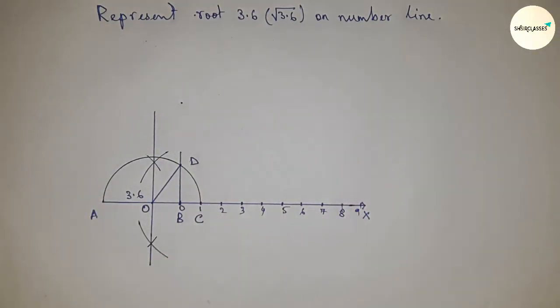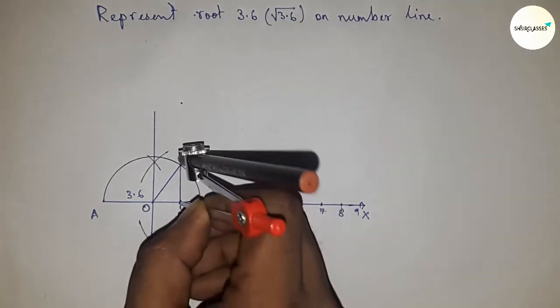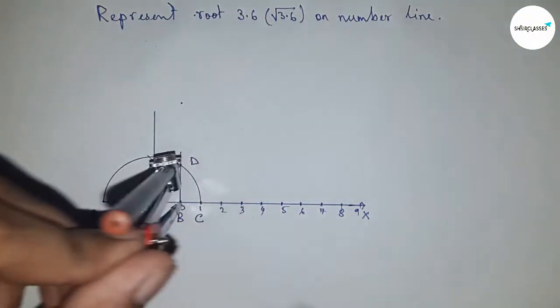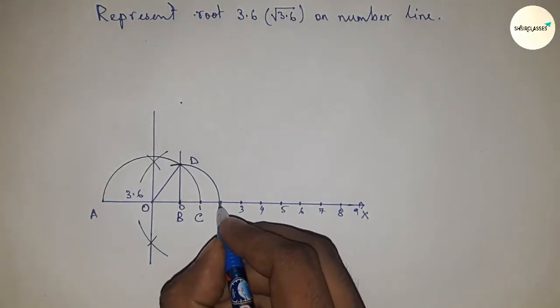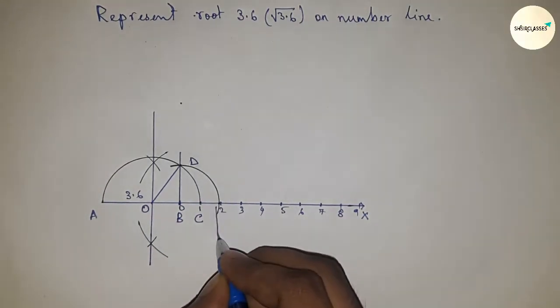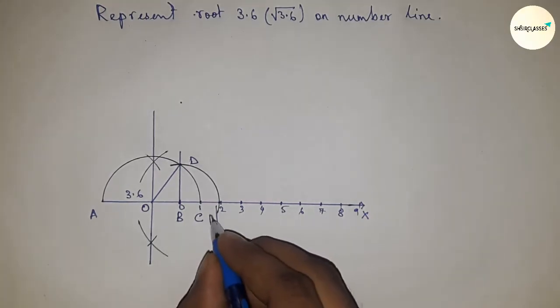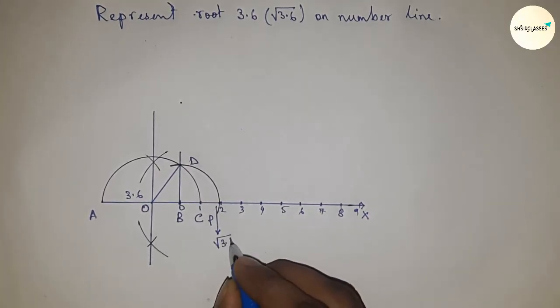Next, join O and D. Now take the distance BD with a compass and draw an arc which meets the number line at point P. This is the representation of root 3.6 on the number line.